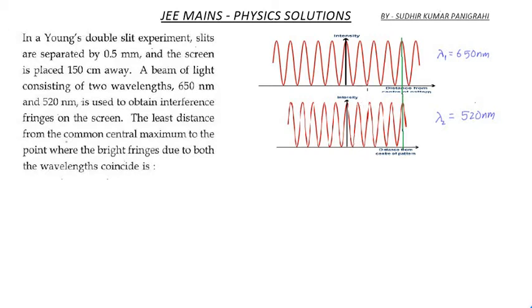This happens because width is given as lambda D upon d. So fringe width is directly proportional to lambda. That is why if lambda is less, the fringe width will be less, and if lambda is more, fringe width will be more.